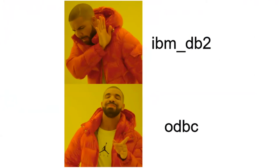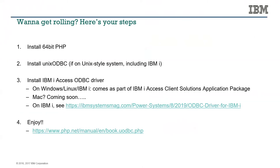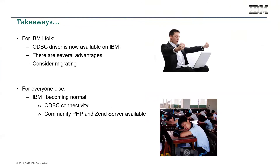If I were a strategist or someone looking at developing new applications on IBM i, I would definitely be looking at the ODBC option. Quick pointers on how to get started: make sure you have PHP installed; on a Unix-like system, which includes IBM i, you need the unixODBC driver manager; then get the driver using the article linked here for download pointers; and finally just write ODBC code as per the PHP manual. Overall it's a pretty easy process. Key takeaway for IBM i folks: we have an ODBC driver now available on IBM i that can talk to the local system — consider migrating to it if you possibly can.